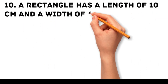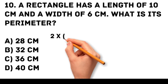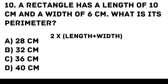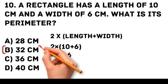Question 10. A rectangle has a length of 10 centimeters and a width of 6 centimeters. What is its perimeter? A. 28 centimeters. B. 32 centimeters. C. 36 centimeters. D. 40 centimeters. Answer: B. 32 centimeters. Perimeter of a rectangle is 2 times (length plus width). Therefore, 2 times (10 plus 6) equals 2 times 16 equals 32.